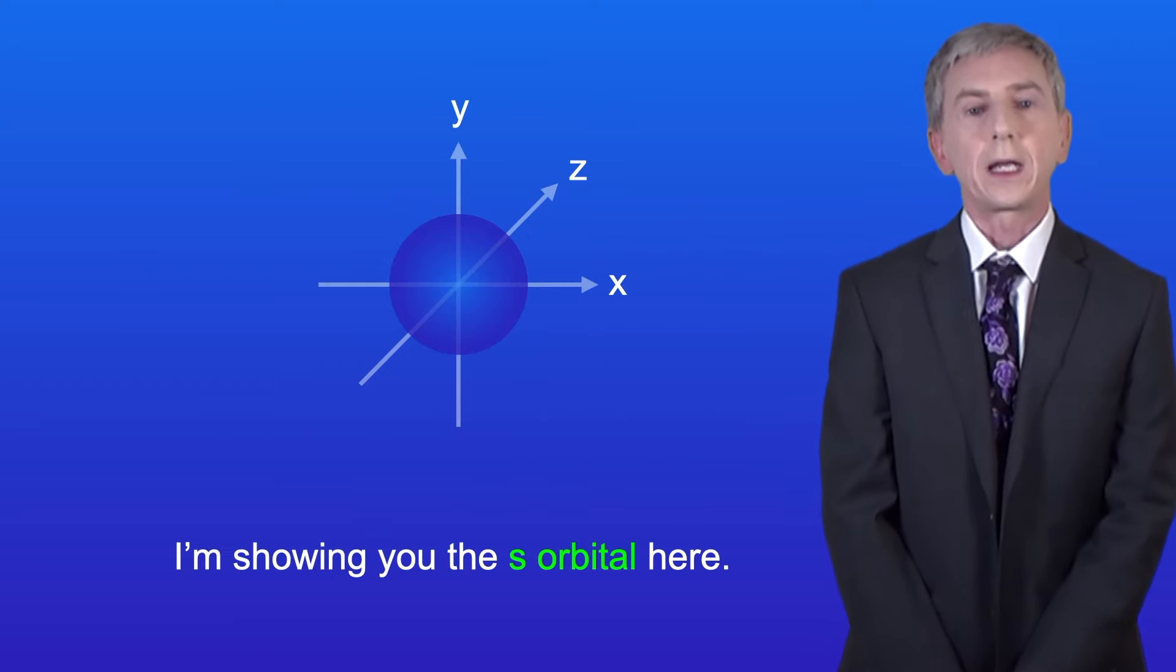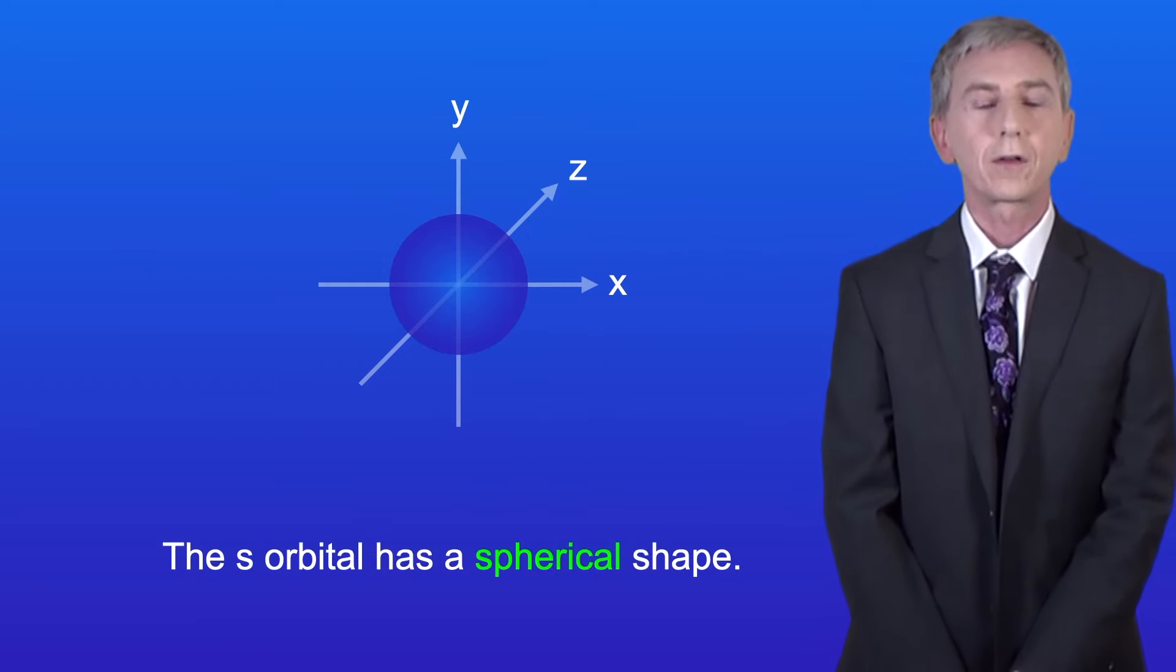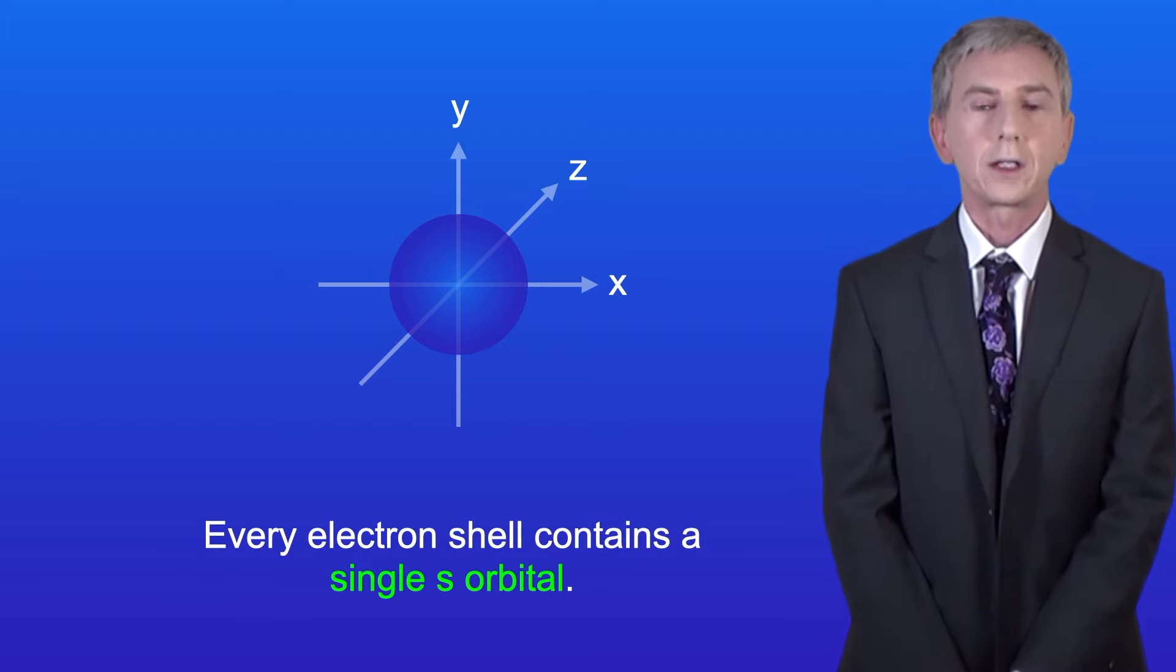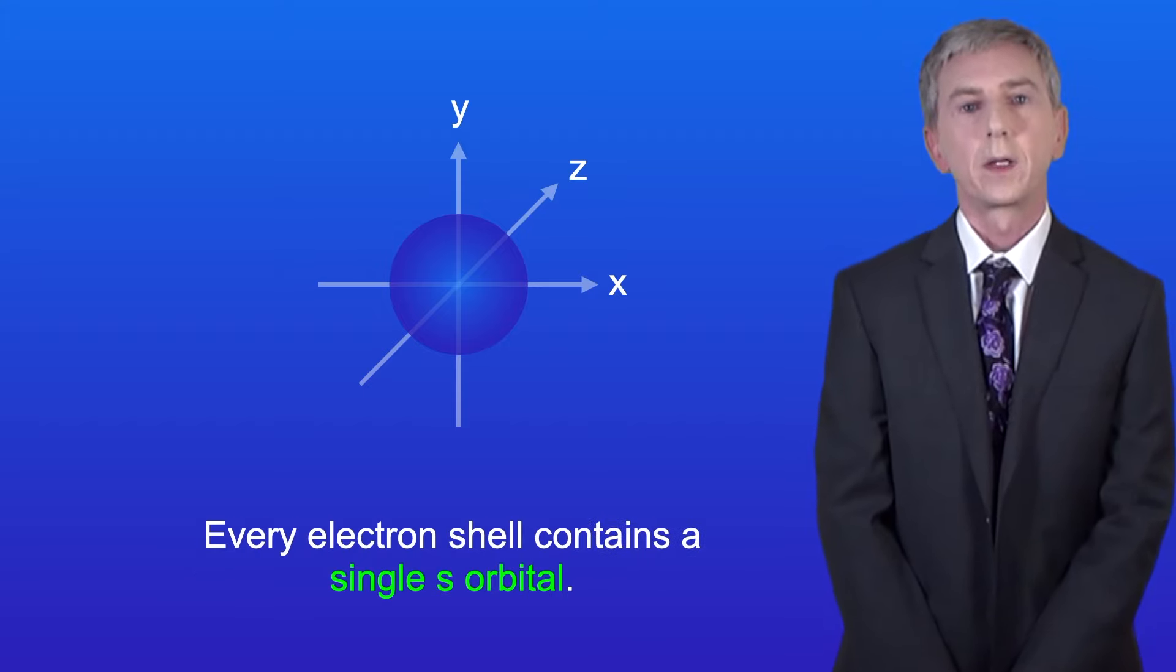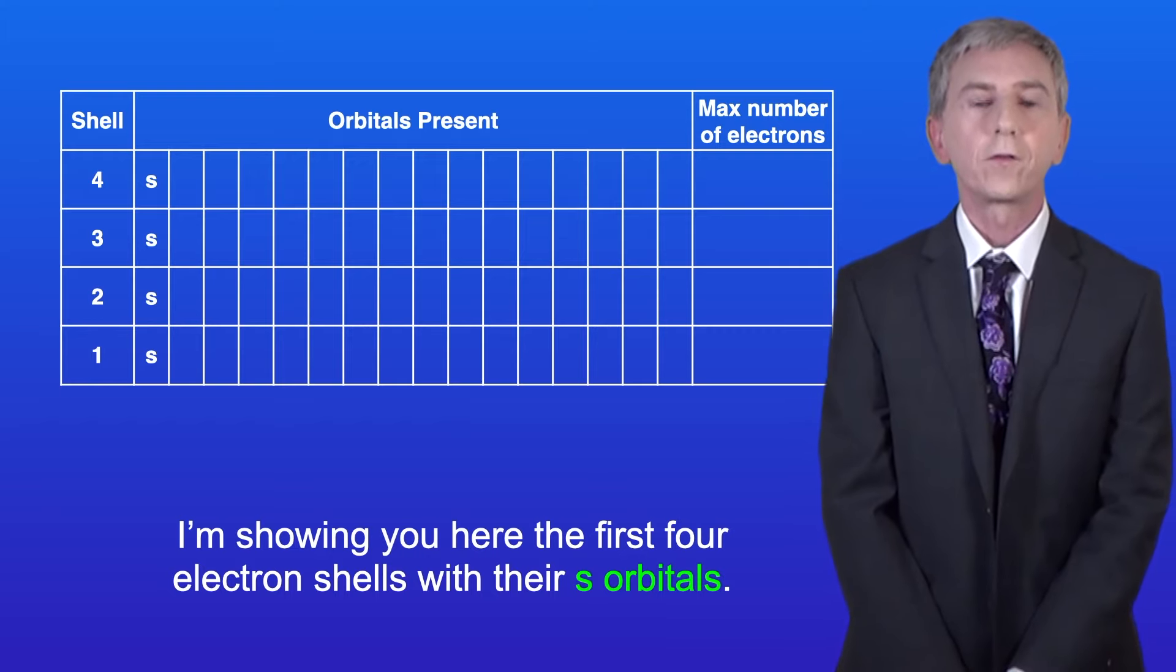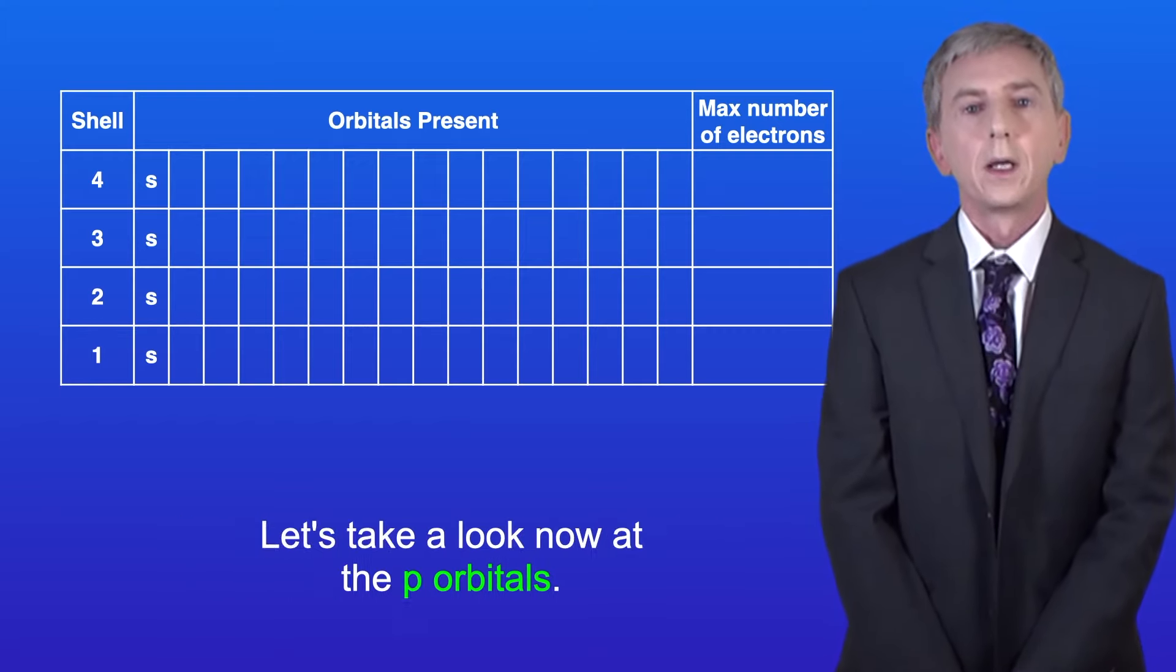I'm showing you the S orbital here, and as you can see, the S orbital has a spherical shape. Every electron shell contains a single S orbital. So I'm showing you here the first four electron shells with their S orbitals.